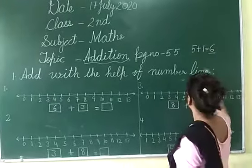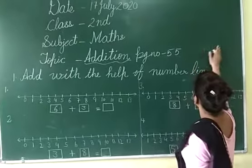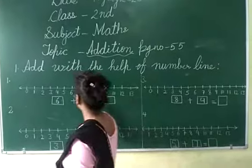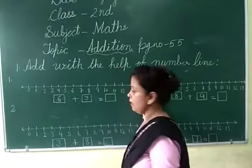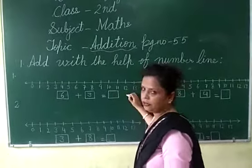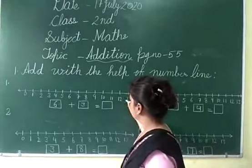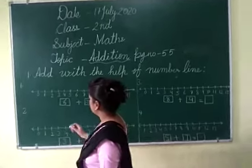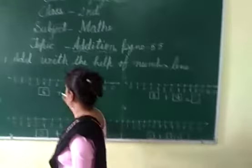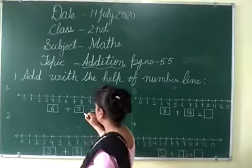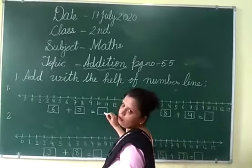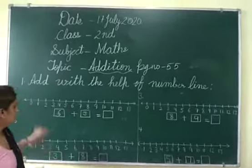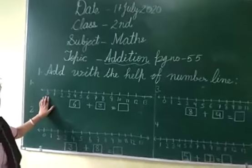We will start with the number line. The number line is on page number 55, you will already have drawn it. First we will start with some examples. The first problem is 6 plus 3. So we will solve this and find the answer.